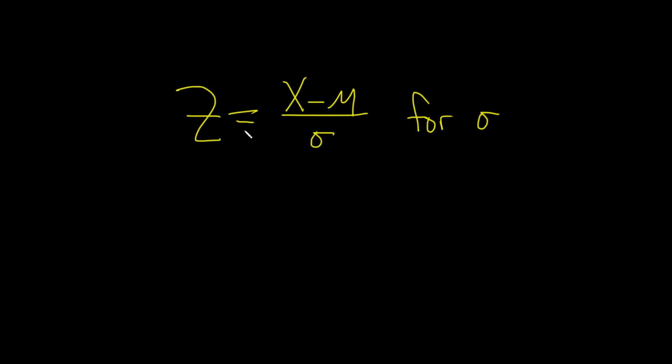So we have z equals x minus mu and it's being divided by sigma. So to solve for sigma we first need to get rid of the fact that it's down here.